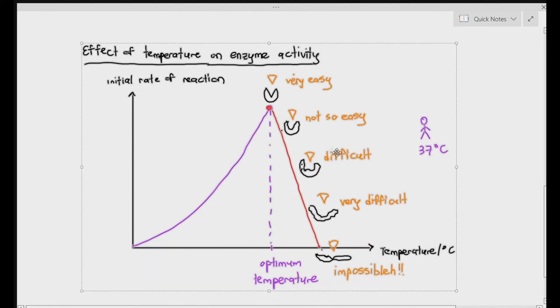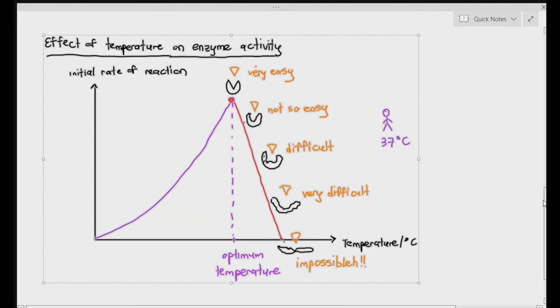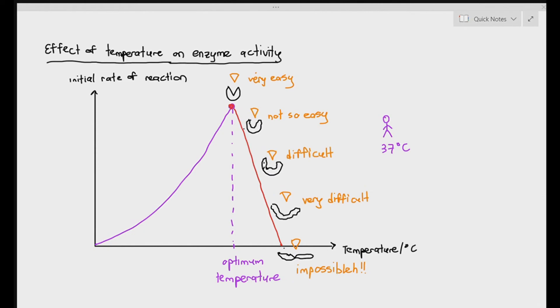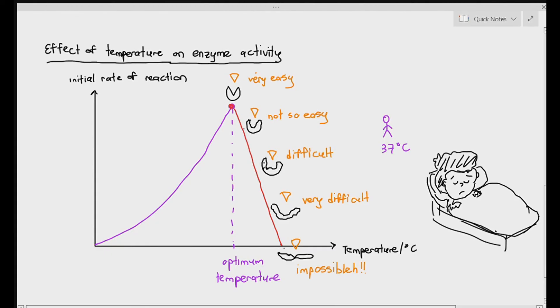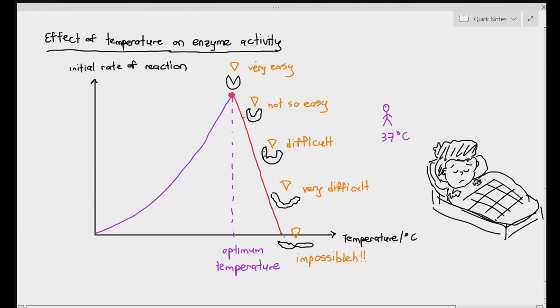That is why we have to be very careful when our body temperature goes above 37 degrees Celsius. Our optimum body temperature is always 37 degrees Celsius, give or take about 0.1 to 0.2 degrees Celsius. When our body temperature is too high, that means we have an extremely high fever, and it can be very dangerous for us, because it may cause our enzymes in the body to denature. The rate of chemical reactions in our body will significantly drop.